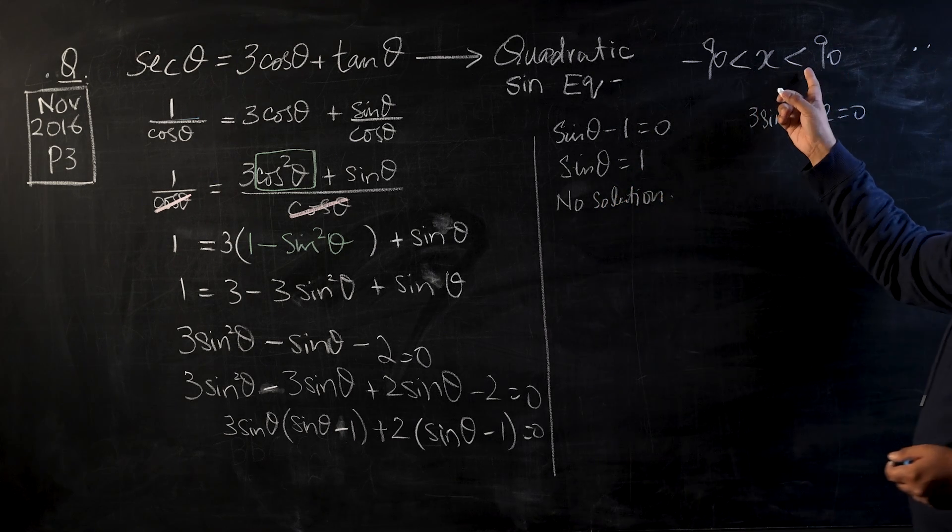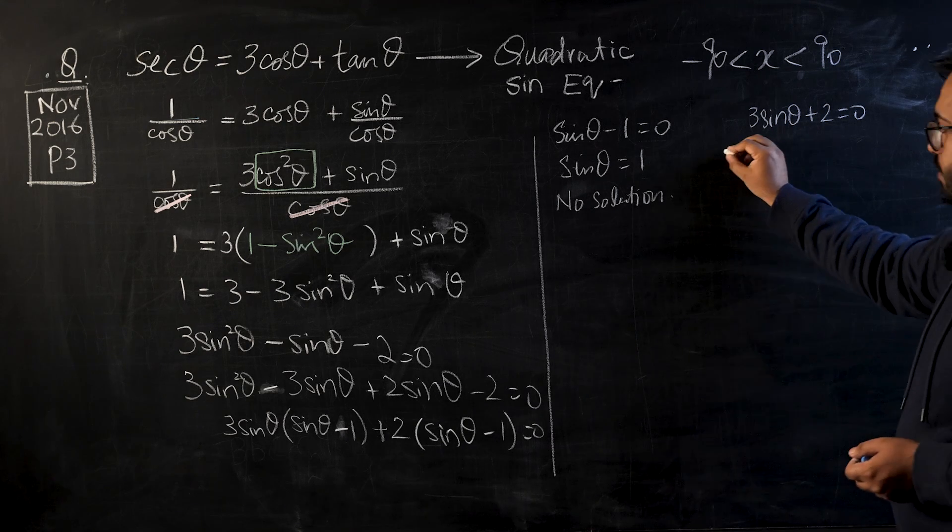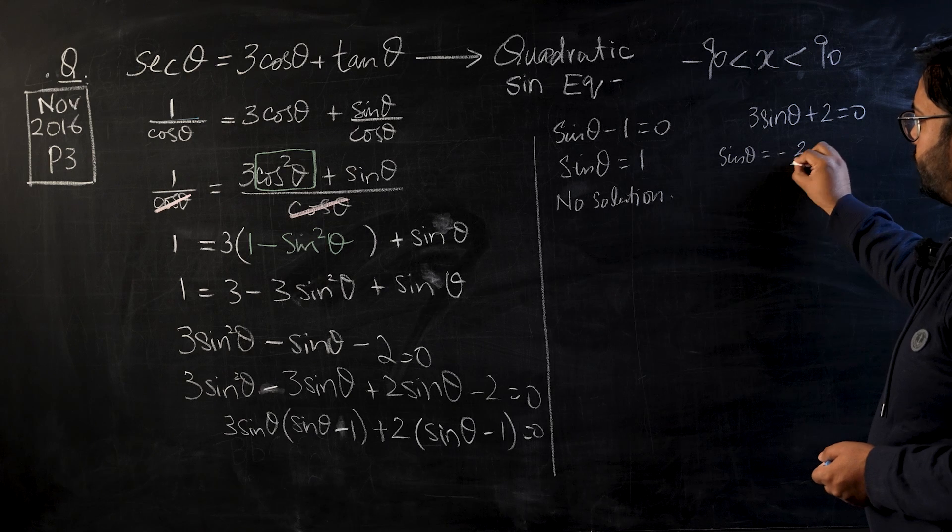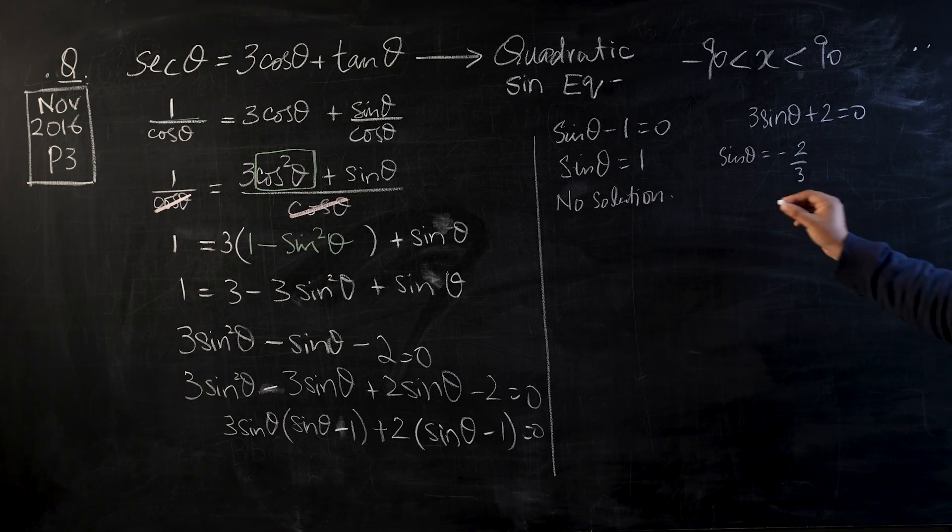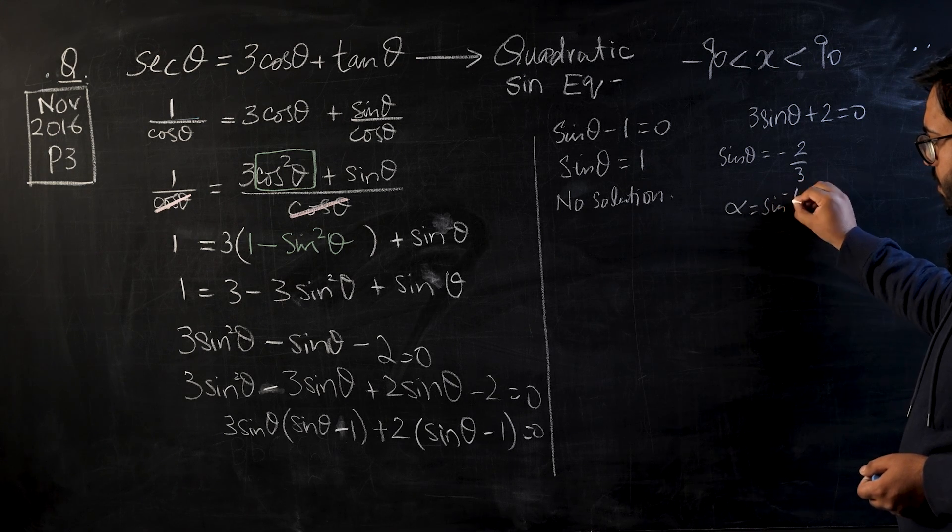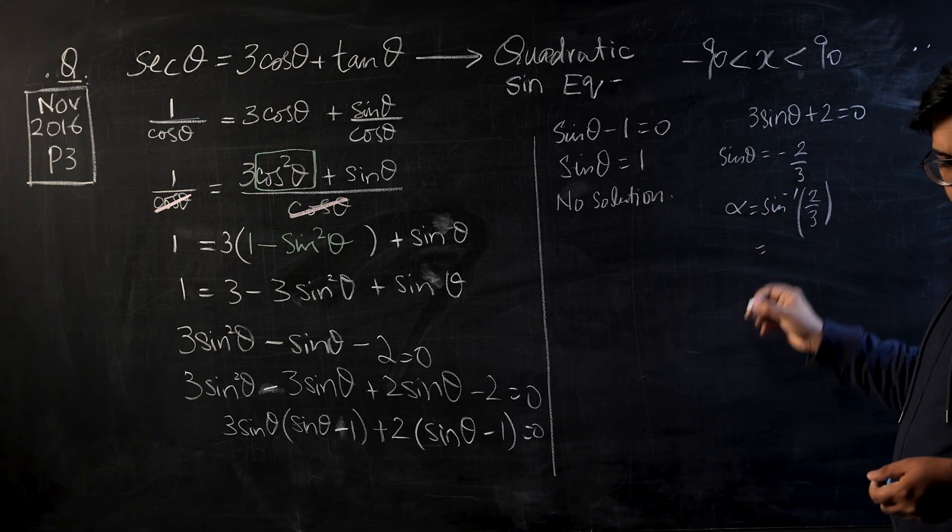So there are no solutions from there because the available solution was 90, and 90 is not included in our domain. Let's try this one. So this will become sin θ equals negative 2/3. And now we can go for finding basic angle alpha.